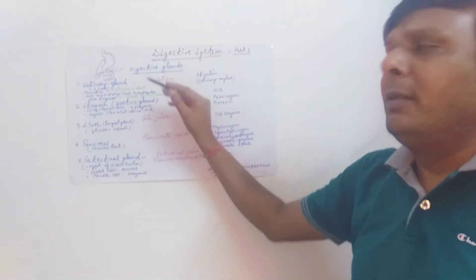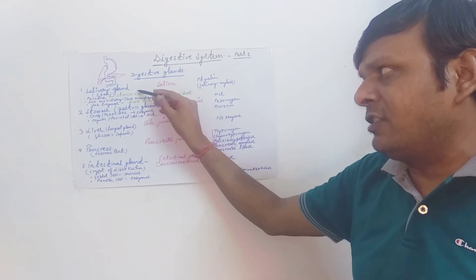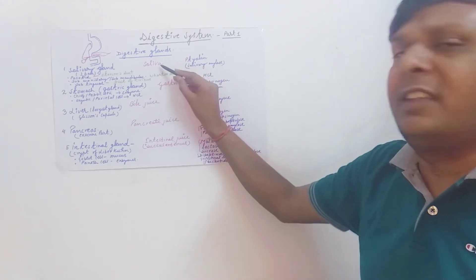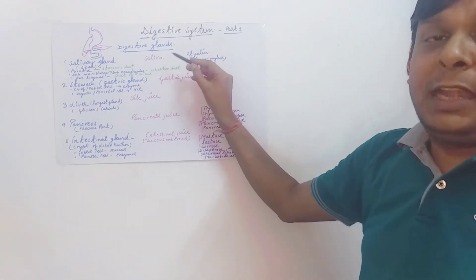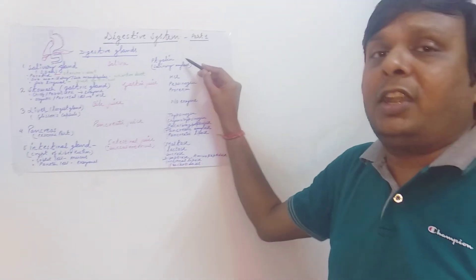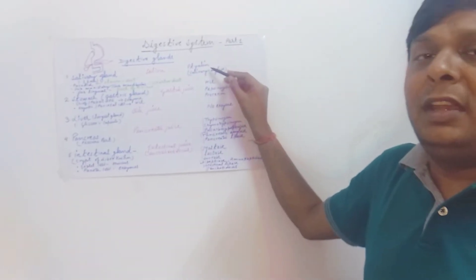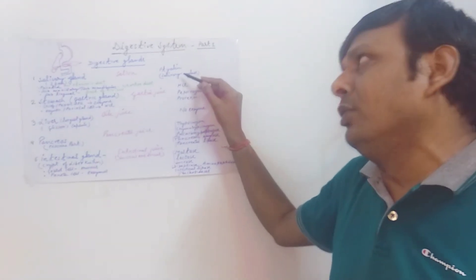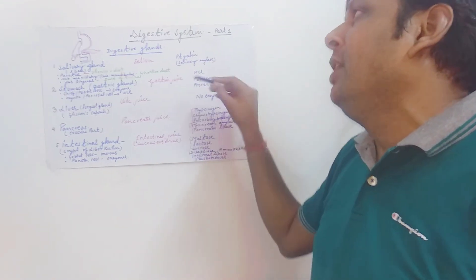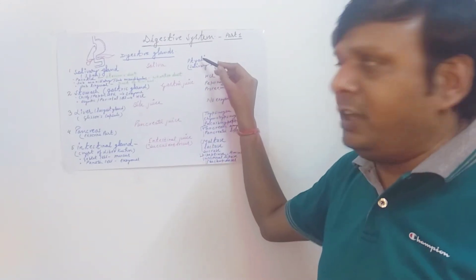These three pairs of salivary glands mainly release saliva through different ducts. The saliva works at pH 6.8 and contains an important carbohydrate-digesting enzyme known as salivary amylase (or ptyalin). Salivary amylase mainly converts starch or amylose into maltose. So the digestion of carbohydrates starts in the mouth (buccal cavity) by the effect of salivary amylase, which functions at pH 6.8.